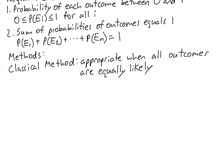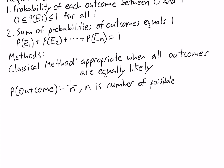Examples we've already seen include tossing a coin or rolling a die, where all outcomes are equally likely. When tossing a coin, heads and tails are equally likely. When rolling a die, all numbers from 1 through 6 are equally likely. In the classical method, the probability of each outcome equals 1 divided by n, where n is the number of possible outcomes.